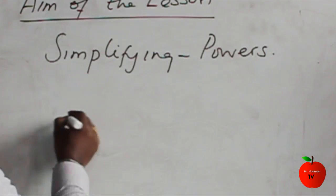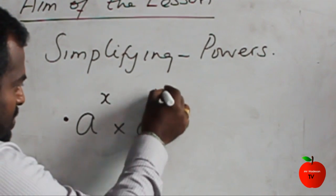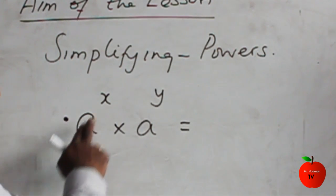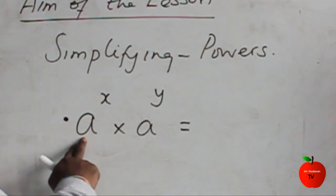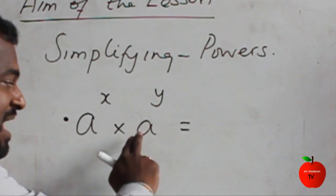The first one: a to the power x times a to the power y. Here you have to identify the base and the power. The a we call the base, and x is the power. Times a is the base,